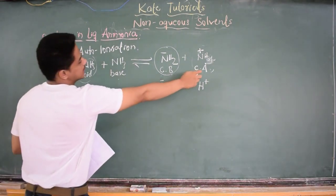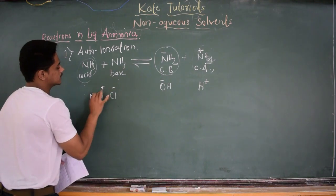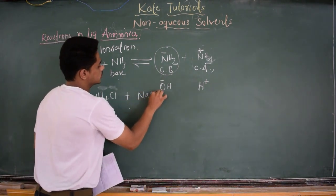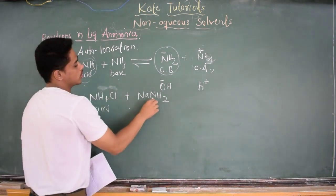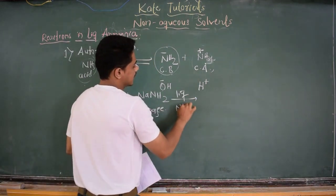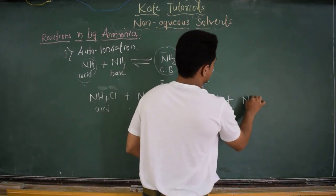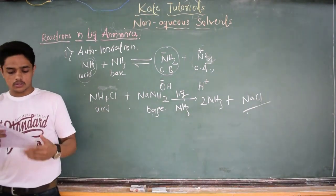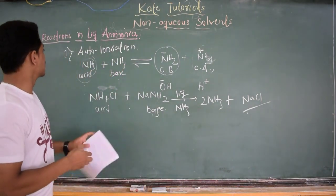NH₄⁺ acts as acid. Now let us consider NH₄Cl reacted with NaNH₂ (which is Na⁺ and NH₂⁻). NH₄⁺ acts as acid and NH₂⁻ acts as base. In liquid ammonia, the reaction gives two molecules of ammonia solvent plus NaCl. When acid reacts with base, we get salt and solvent — this is an acid-base reaction in liquid ammonia.